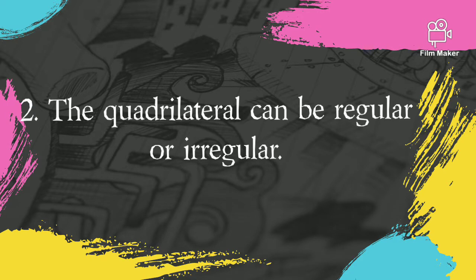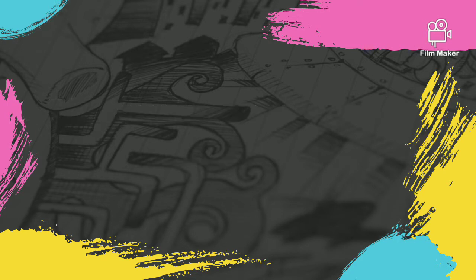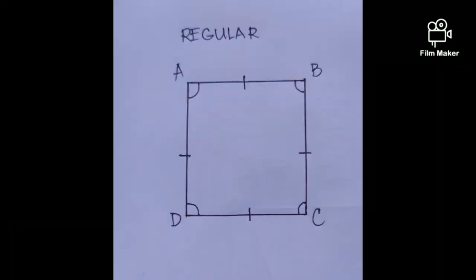Number two, the quadrilateral can be regular or irregular. In a regular quadrilateral, the four sides are all equal, and all four angles are also equal, just like in this photo.